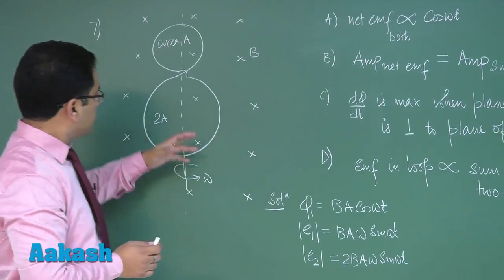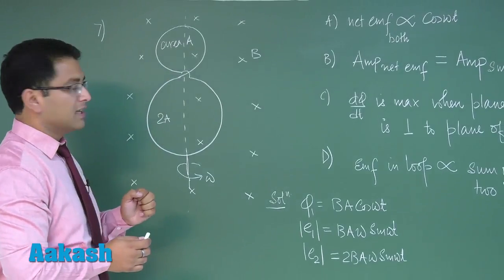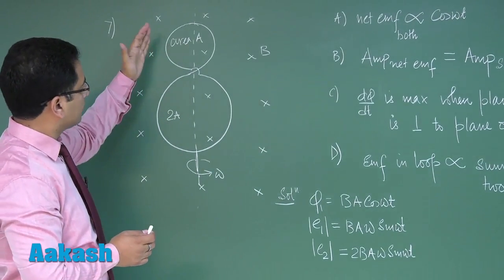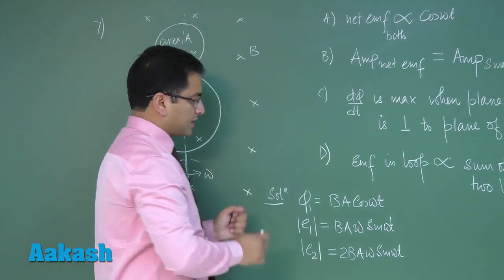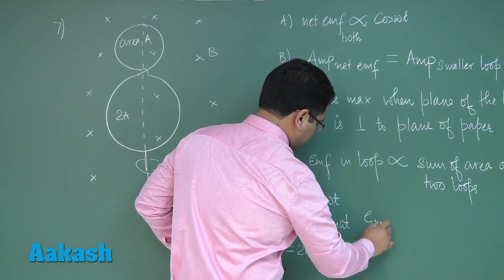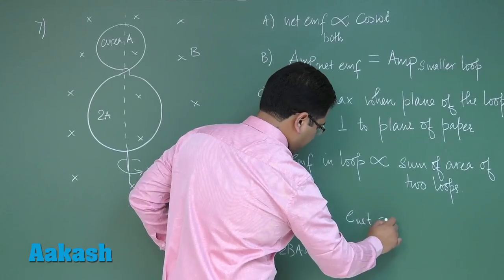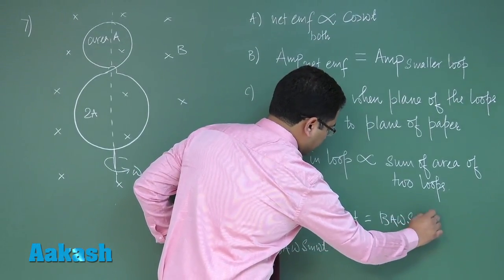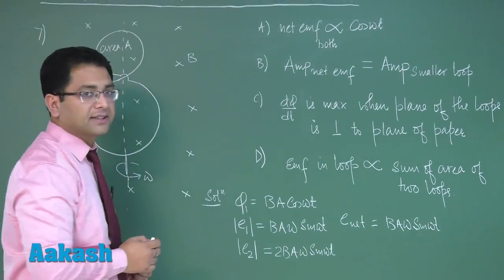But now due to the direction of the EMF, which you can validate using Lenz's law, the direction of the EMF on this and this would be opposite, so the net EMF would of course be equal to B A omega sine omega t because these two things would be subtracted.